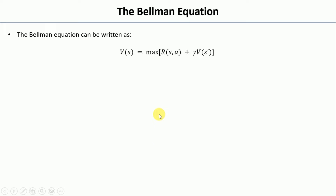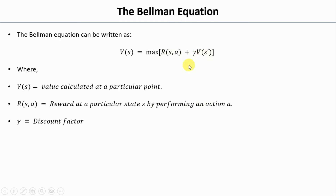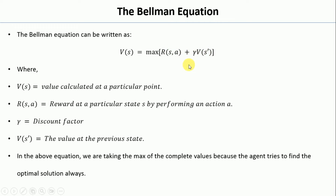The Bellman equation looks something like this: phi of S is always equivalent to the maximum of R — that is the reward obtained by performing an action A in state S — plus gamma, the discount factor, multiplied by phi(S'), that is the value in the previous state. We will use this equation to assign different values to each cell in a given grid.